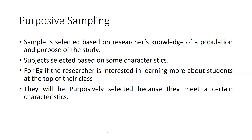Purposive sampling, also called judgmental sampling, depends on the researcher's knowledge of the population and the purpose of the study. Subjects are selected based on certain characteristics. For example, if a researcher is interested in learning about students at the top of their class, those students are purposively selected because they meet the required characteristics.